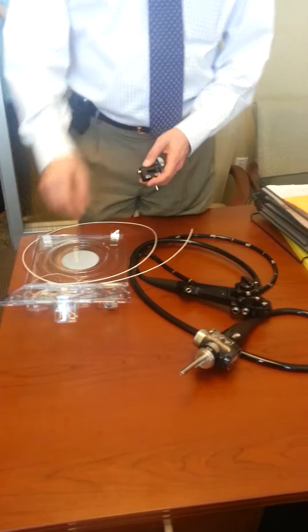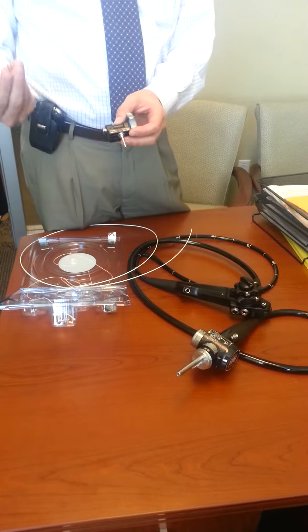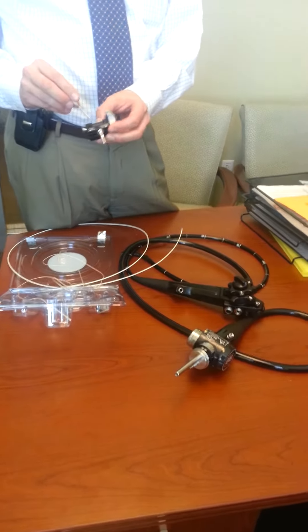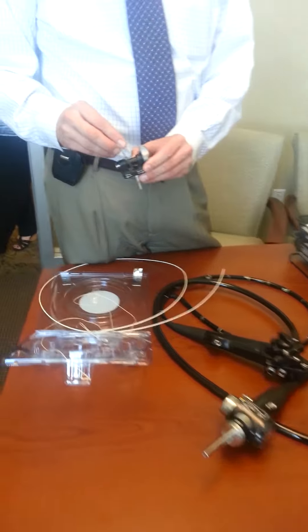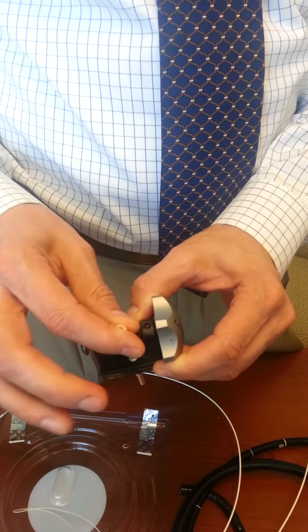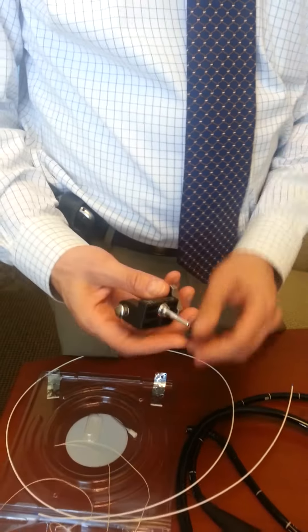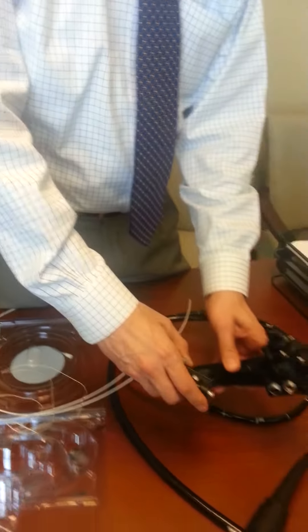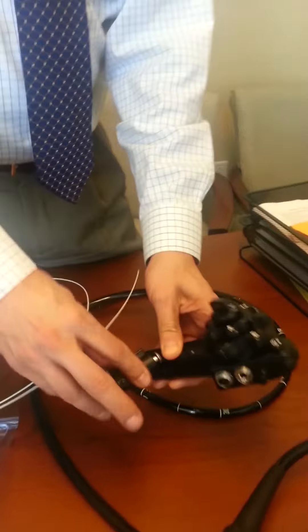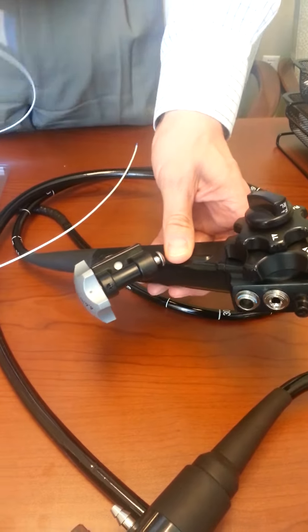The first step is to take the pledget and put it through the white diaphragm here, break that, and then load the spool into the scope through the suction port.